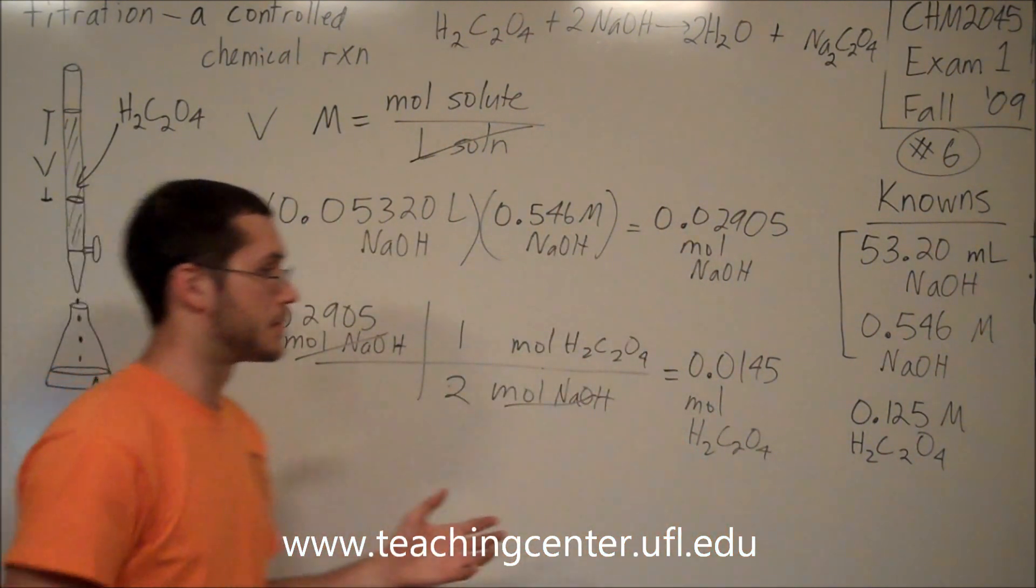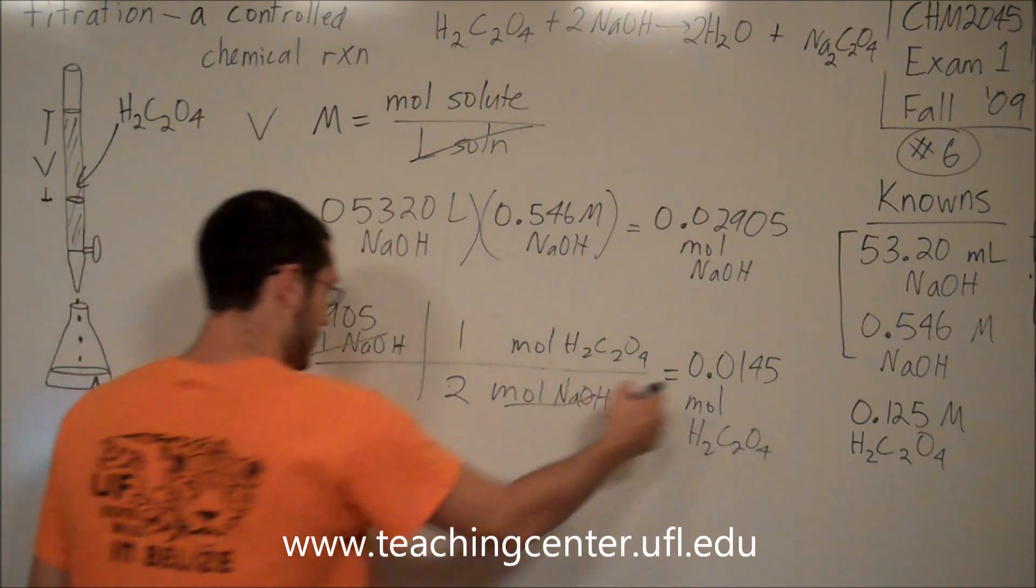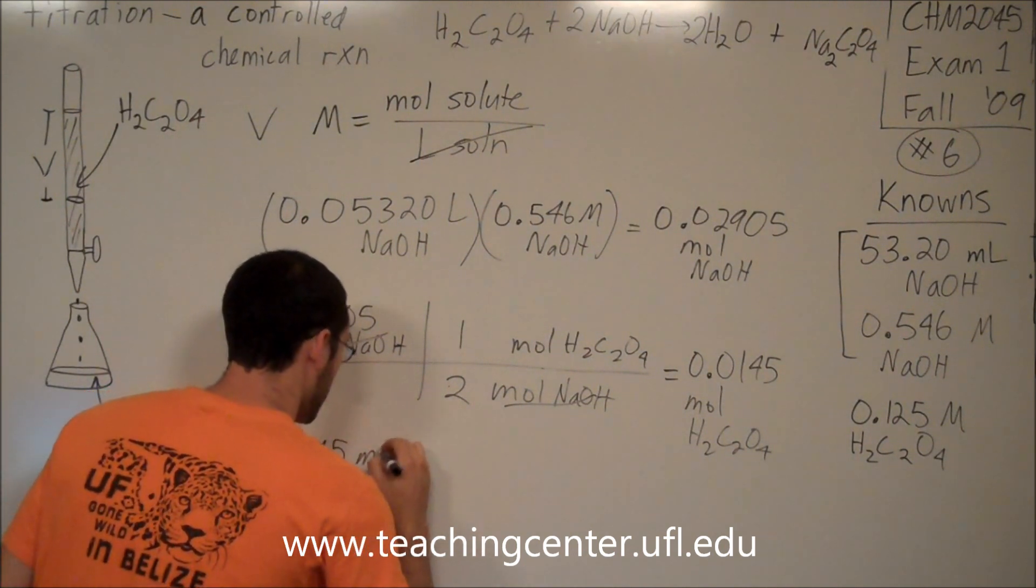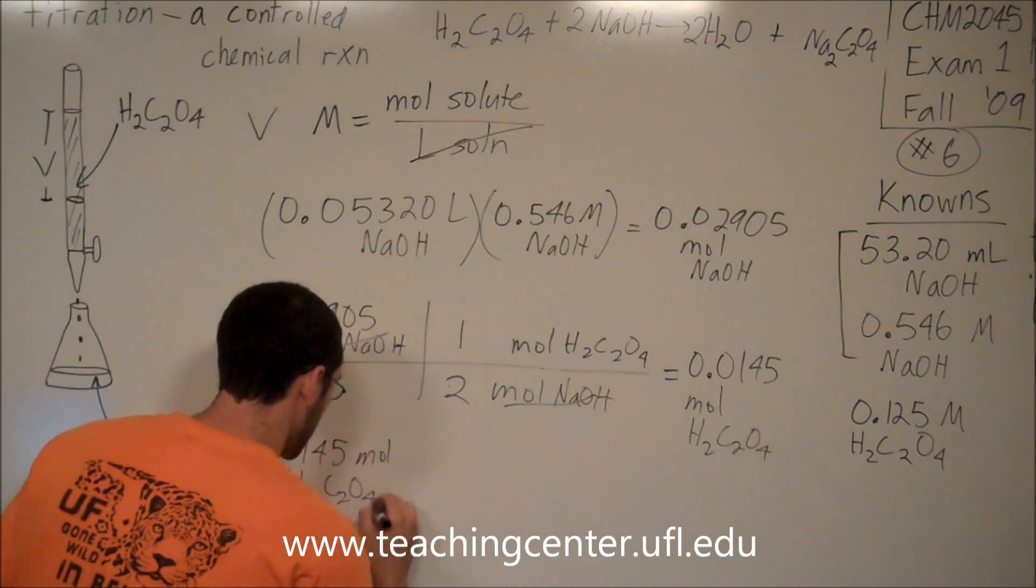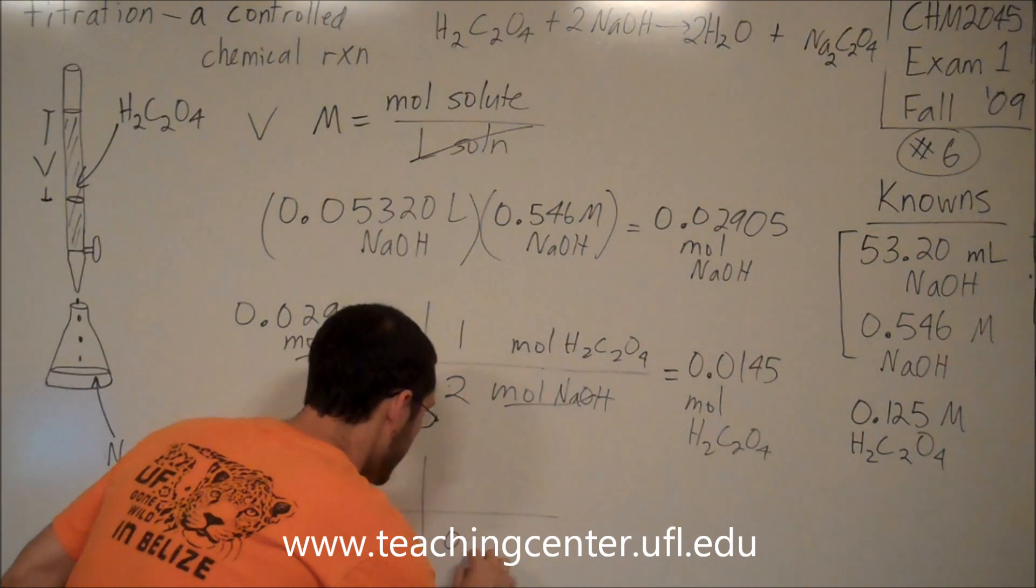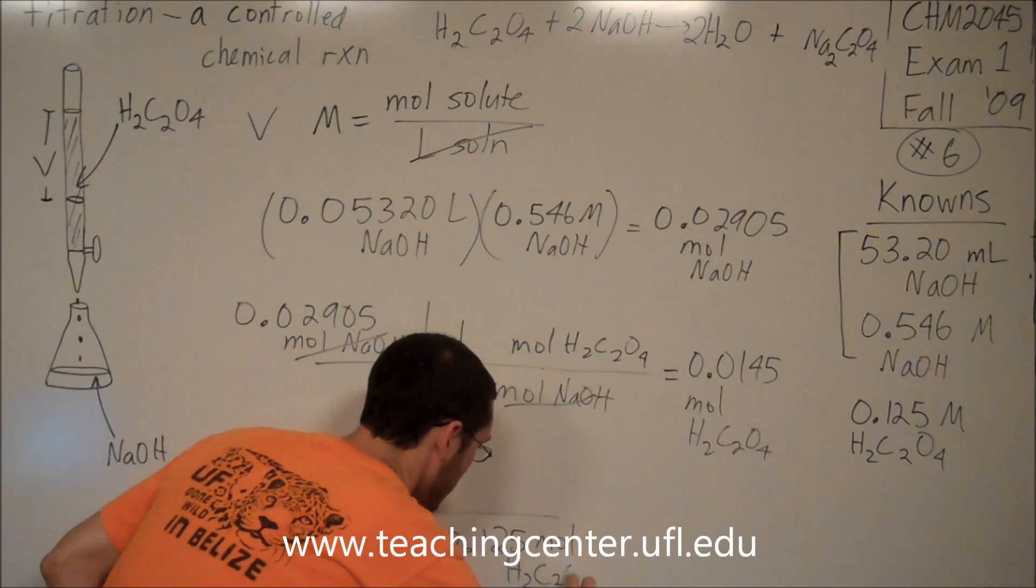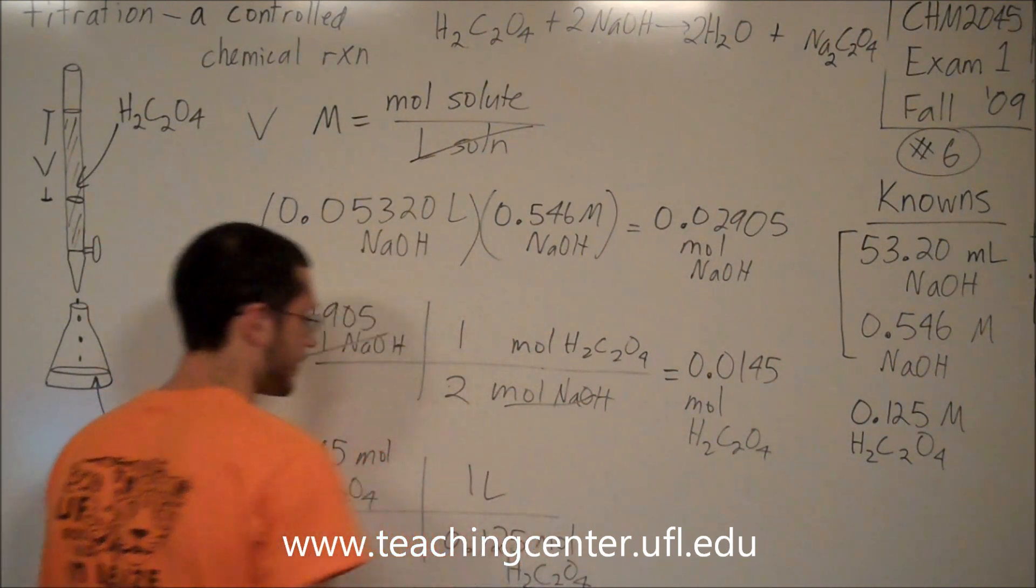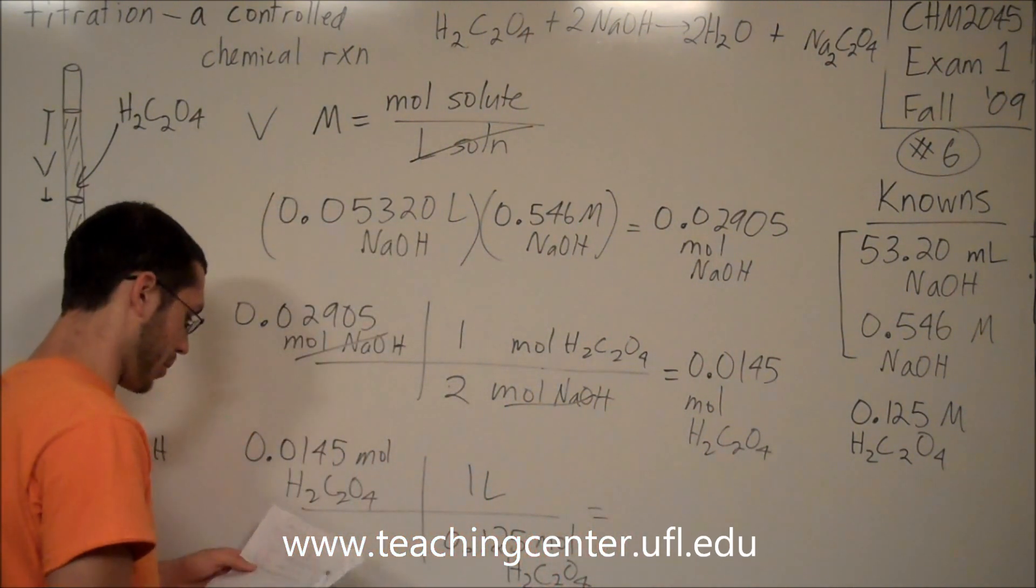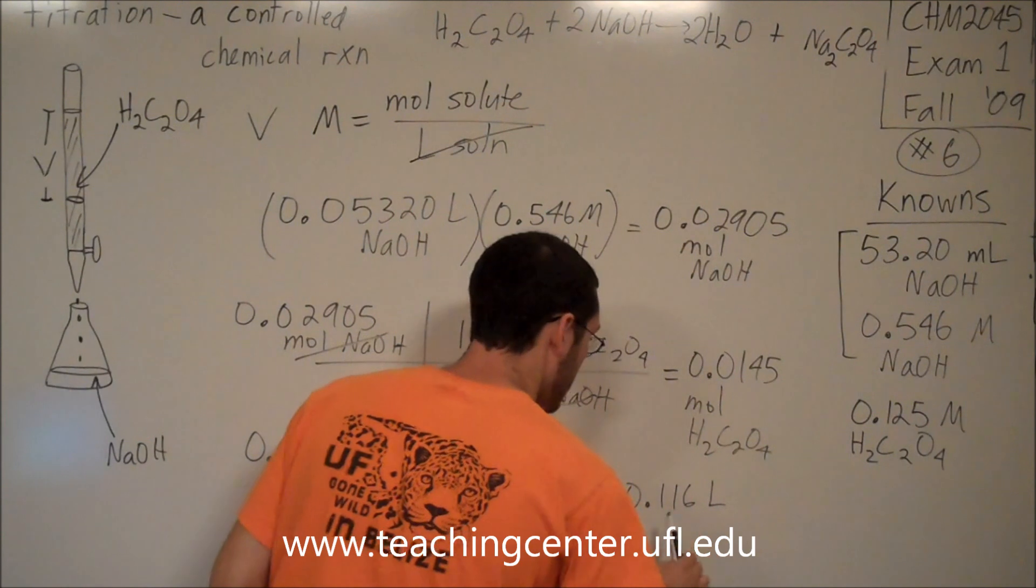But it's asking me for the volume of oxalic acid. And I look over here and say the only known that I haven't used is the concentration of the oxalic acid. So I'm going to use this moles, 0.0145 moles oxalic acid, and then I'm going to use the molarity as a ratio. I'm going to say there's 0.125 moles oxalic acid for every one liter of oxalic acid, because that's what the molarity is. So I punch this out and I get 0.116 liters. This is my final answer.